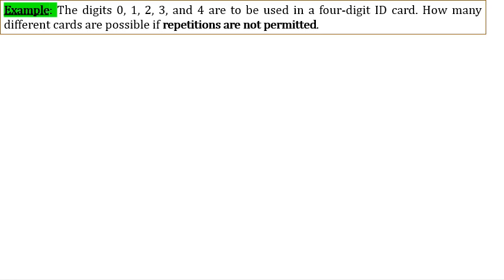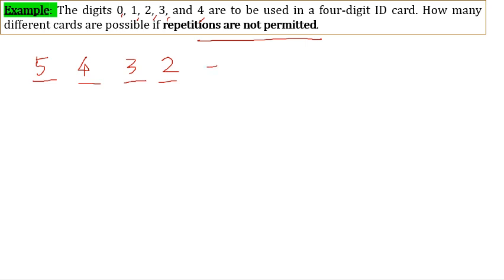For the same digits 0, 1, 2, 3, 4 used in a 4-digit ID card, how many different cards are possible if repetitions are NOT permitted? The first position has 5 choices, the second has 4, then 3, then 2. So 5 × 4 × 3 × 2 = 5! = 120.